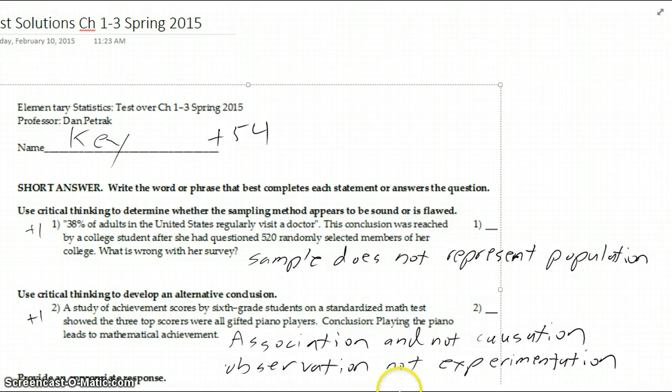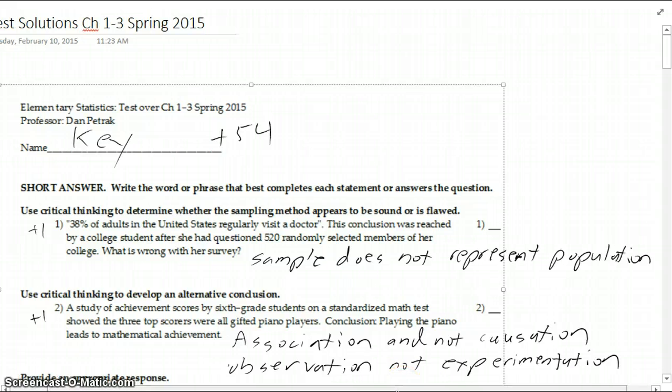So great job to everyone, and go through these somewhat quickly and explain a little bit. On the first one, most people understood that the sample does not represent all American students. So to infer that this represents the population of all Americans would be wrong since the sample is only college students.